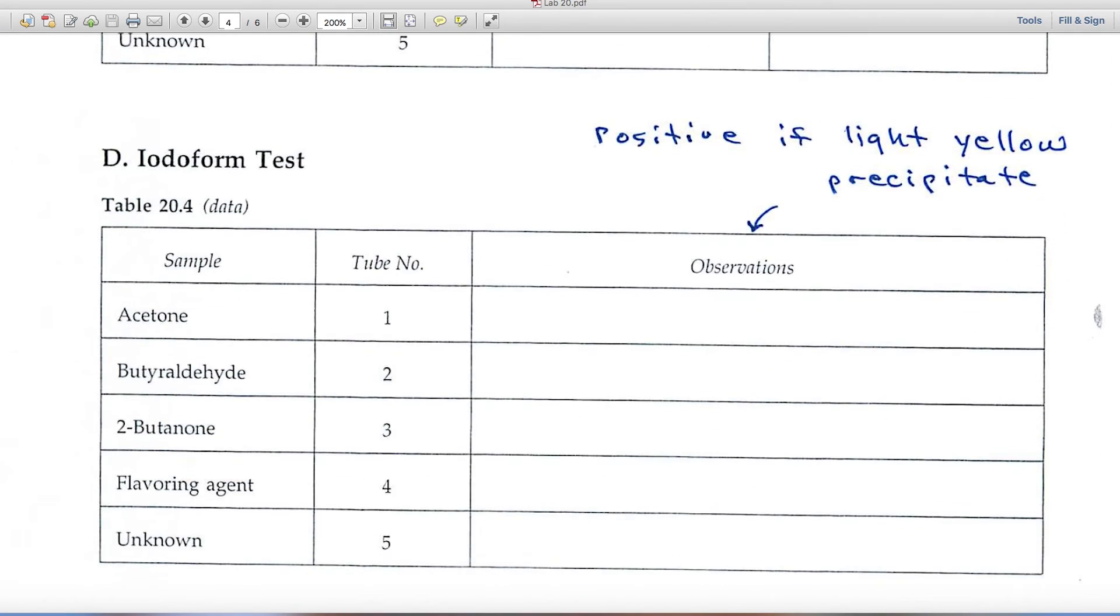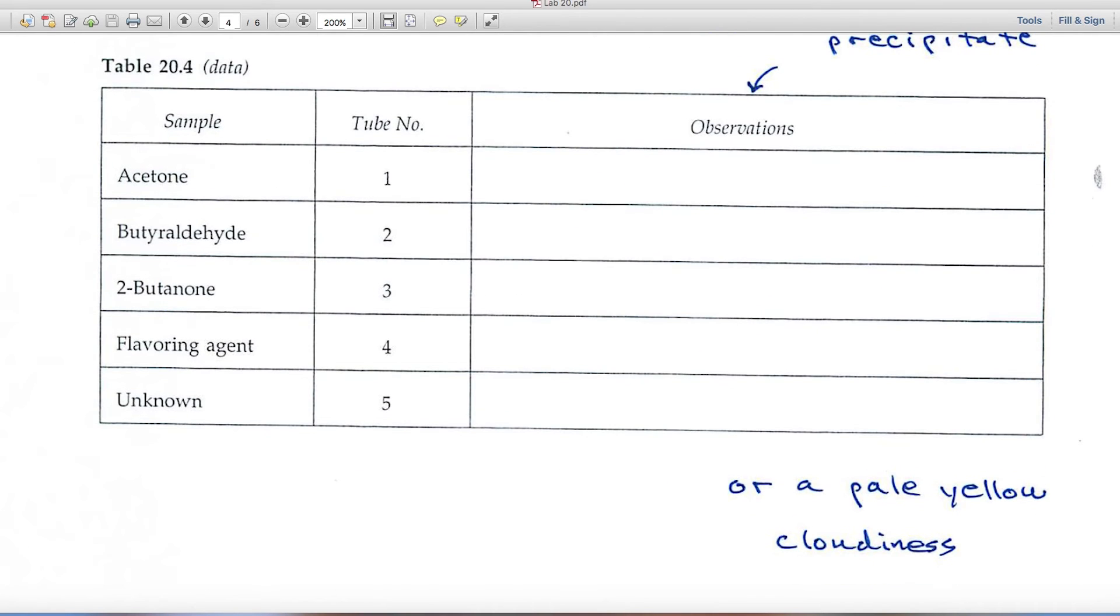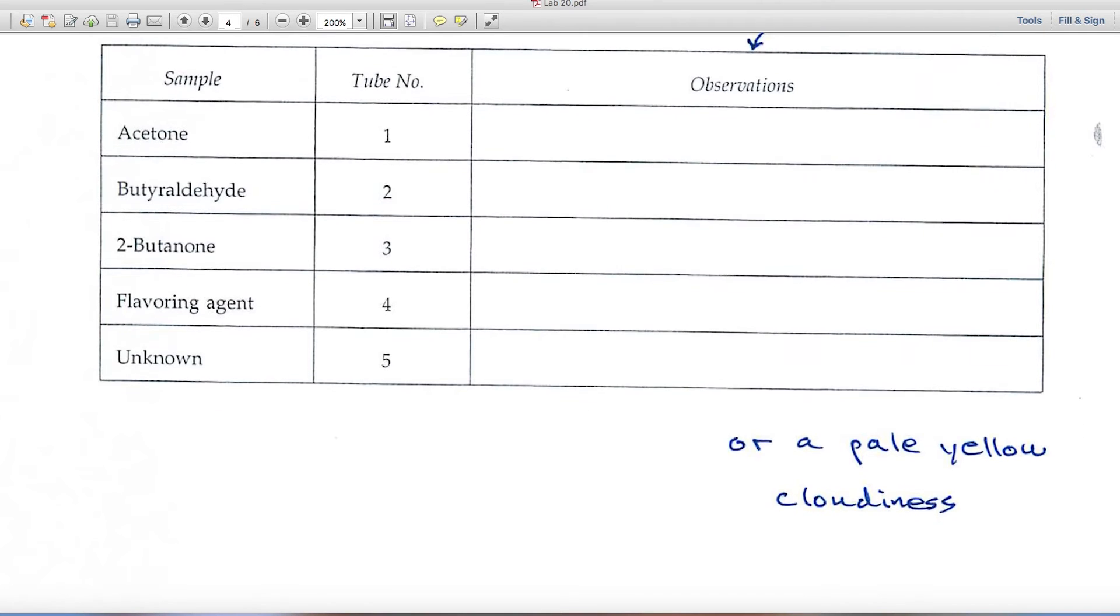Part D, the iodoform test. This is positive if you get a light yellow precipitate. And sometimes, rather than a full-fledged precipitate, you'll only see a pale yellow cloudiness. So note that as well.